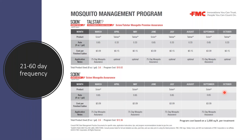Q&A — Does FMC make any products for ticks or mosquitoes in a different class from pyrethroids for rotating? Right now the answer is really no — there's just not a lot of other options out there. Neonicotinoids have some regulatory issues right now. FMC doesn't currently have a non-pyrethroid option for mosquito and tick specifically, though we do have a newer chemistry for turf pests like grubs, which doesn't help with mosquitoes and ticks unfortunately.